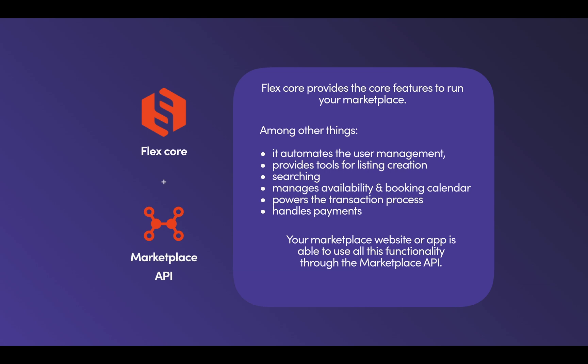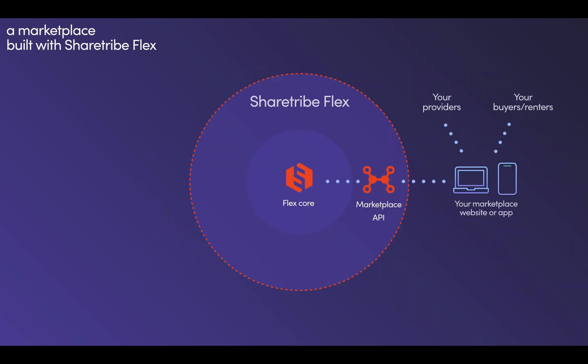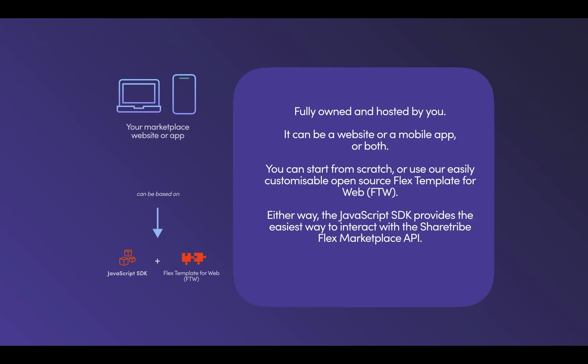Your marketplace website or app is able to use this functionality through the marketplace API. On top of Core, you build your marketplace website or mobile application — this is the part where your users interact with your platform. It can be a website, a mobile app, or both. You can either build it completely from scratch, or use a free open source template as a starting point.